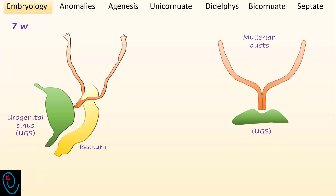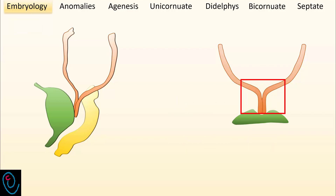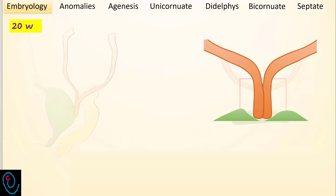Here is an anterior view of the Müllerian ducts approaching the urogenital sinus. By 12 weeks, the caudal portion of the Müllerian ducts fuse to form the uterovaginal canal. By 20 weeks, the septum between the two Müllerian ducts is reabsorbed, forming a single cavity.